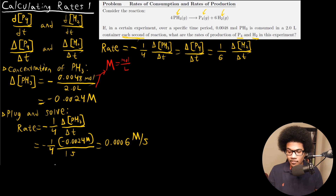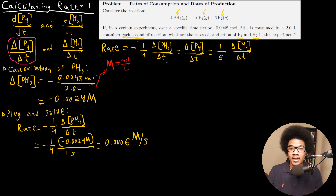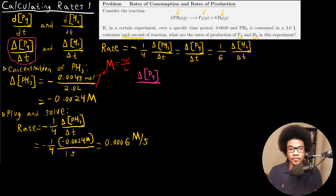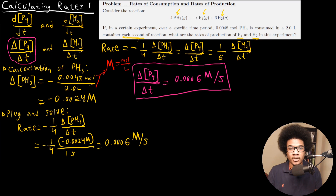Now, if we relate this to the rate of production for each of our products, we can calculate each of the quantities we need. Let's focus on P4 first. Since there's no stoichiometric coefficient in front of this one, it's actually going to be equal to the rate. And what we just calculated was the rate. So the rate of production of P4 is going to be equal to 0.0006 molar per second — equal to the rate with no stoichiometric coefficient needed. So this is our first answer: the rate of production for P4.